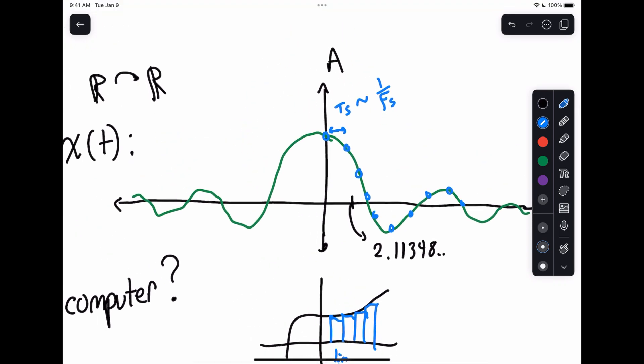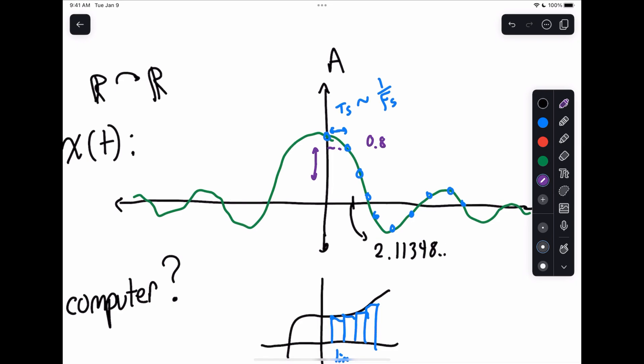The answer is we can do this at least when it comes to time. Now, there's another problem, and that has to do with amplitude. If you notice here with amplitude, we have another real valued point. Each of these amplitudes, maybe this is like 0.8763, et cetera. Also, an uncountably infinite number of possible amplitudes, so we're going to have this issue as well.